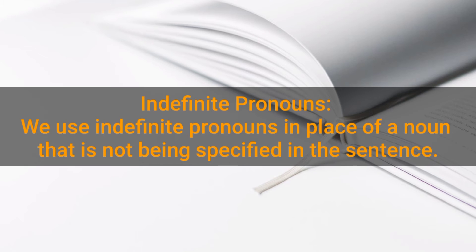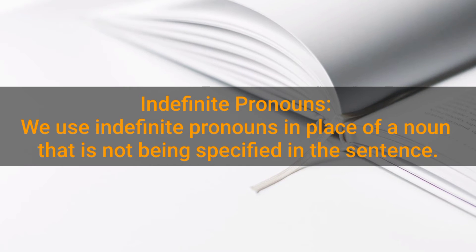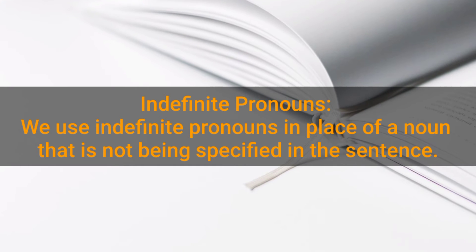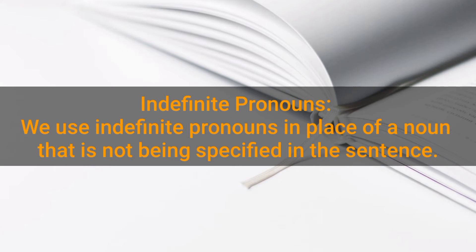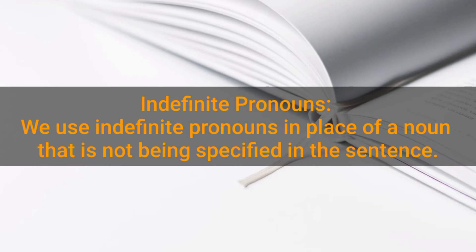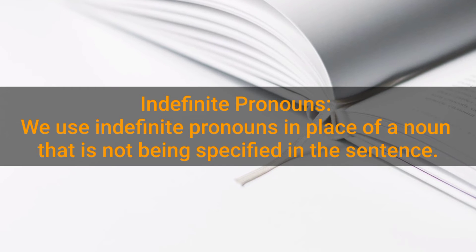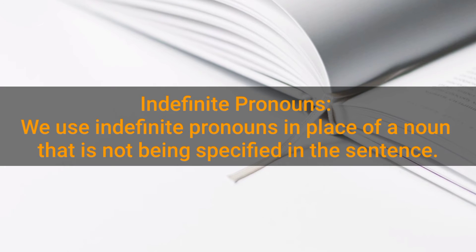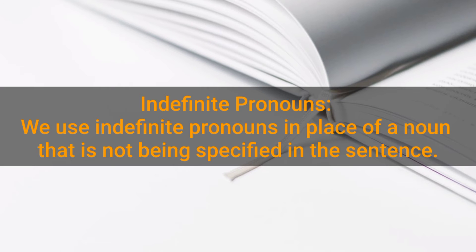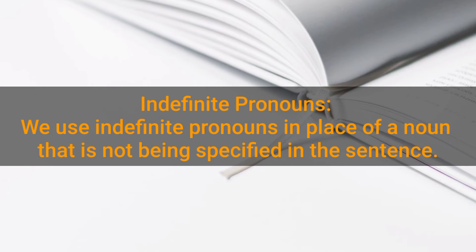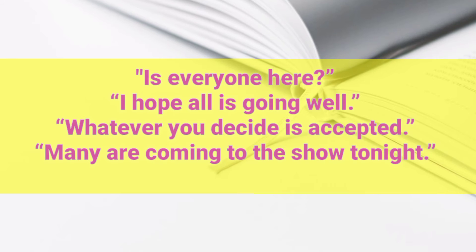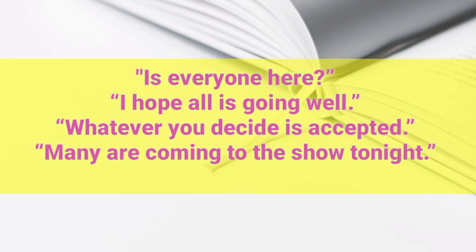Indefinite pronouns. We use indefinite pronouns in place of a noun that is not being specified in the sentence. There are many different indefinite pronouns; which one we use depends on whether we are representing a noun that is a person or thing, and whether that noun is singular or plural. Some common examples: 'Is everyone here?' 'I hope all is going well.' 'Whatever you decide is accepted.' 'Many are coming to the show tonight.'